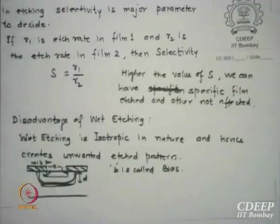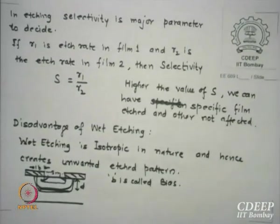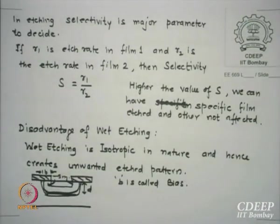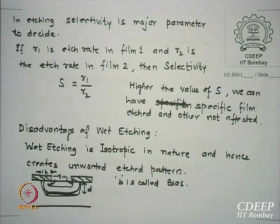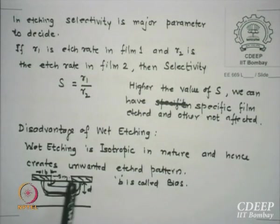One of the problems I mentioned last time is that if you are doing wet etching, most wet etchants are isotropic in their nature. When they etch, they not only etch vertically down but also on the lateral side. That gives you an etched area larger than what the mask was asking. The additional area etched on both sides is given the name B, called bias.